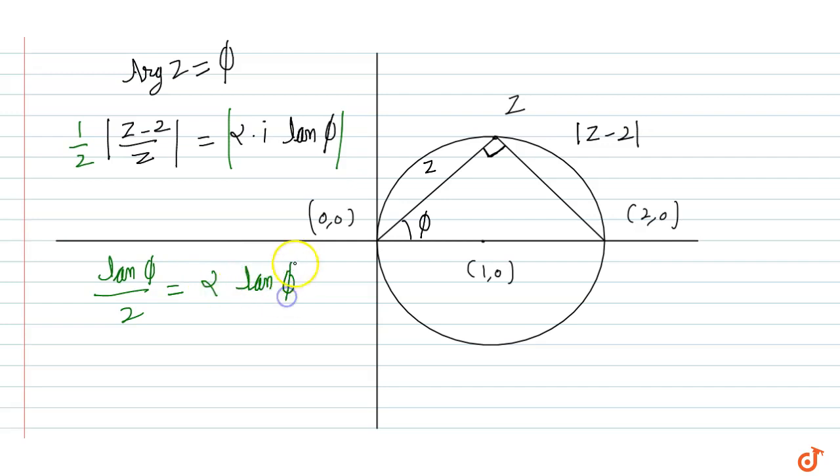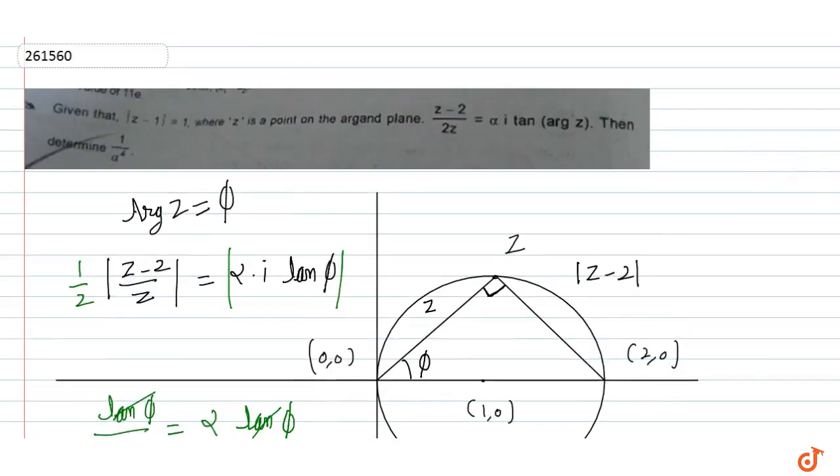Then alpha tan phi, okay, so now tan phi cancels out. Alpha is equal to 1 by 2, okay.